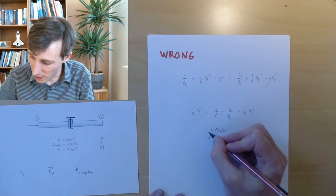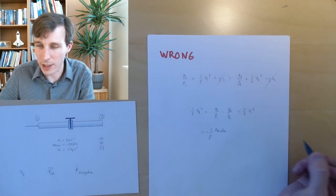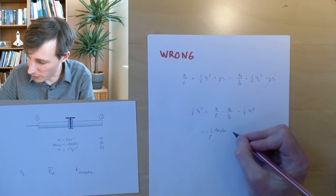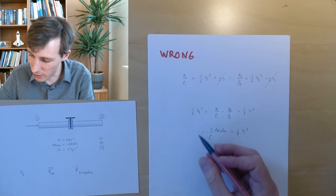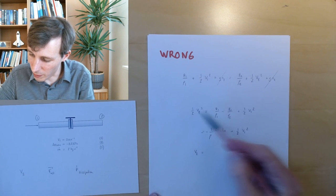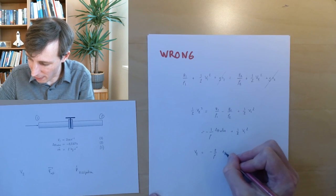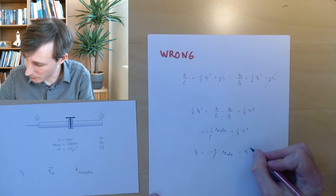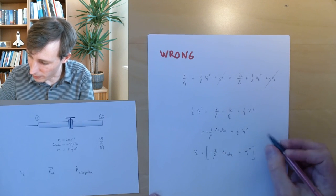I'm going to divide by the density. So 1 half V2 squared equals minus 1 over rho of the delta P valve plus 1 half V1 squared. I can clean this up now. So V2 equals, multiply everything by 2, so minus 2 over rho of delta P valve plus V1 squared, and since I have squared here I've got to put a square root, everything to the power 0.5.